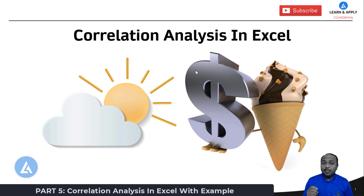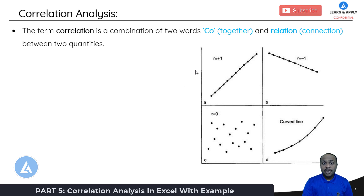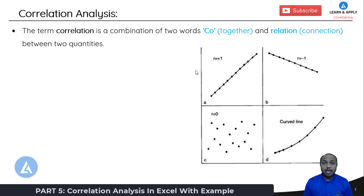Let's start with the meaning of correlation. The term correlation is a combination of two words: co and relation. Co means together and relation means connection. This correlation is between two quantities or more than two quantities. Please note that we are going to conduct the correlation analysis only for continuous data.